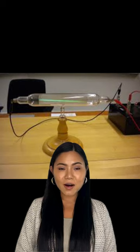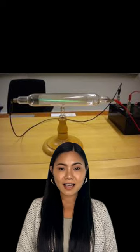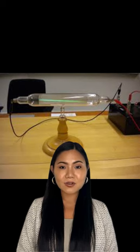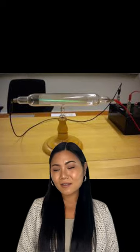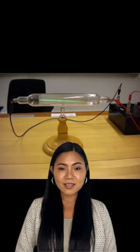The cathode ray tube was developed in 1897 by Ferdinand Braun of Strasbourg in what was then the French-German region of Alsace-Lorraine. It was first used as an oscilloscope to view and measure electrical signals.